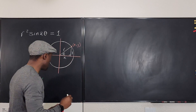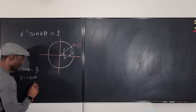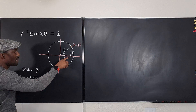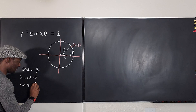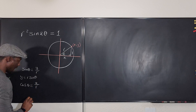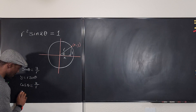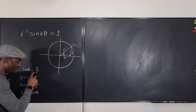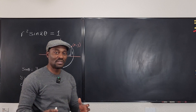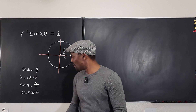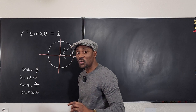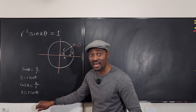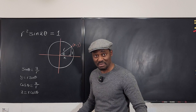You do the same thing for cosine. Cosine theta equals adjacent over hypotenuse, which is x over r. From here, x equals r cosine theta. These are the two most important things you need: y is always r sine theta, and x is r cosine theta.